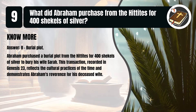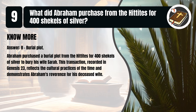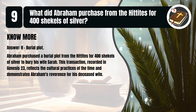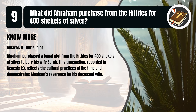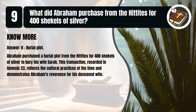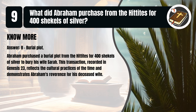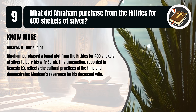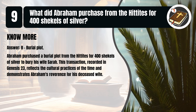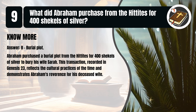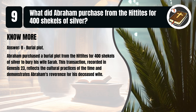That's B. Burial plot. Abraham purchased a burial plot from the Hittites for 400 shekels of silver to bury his wife Sarah. This transaction, recorded in Genesis, chapter 23, reflects the cultural practices of the time and demonstrates Abraham's reverence for his deceased wife.